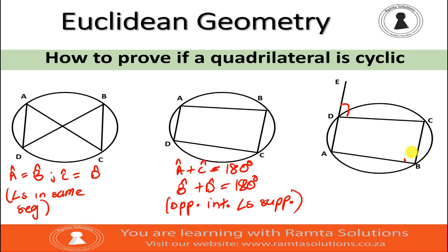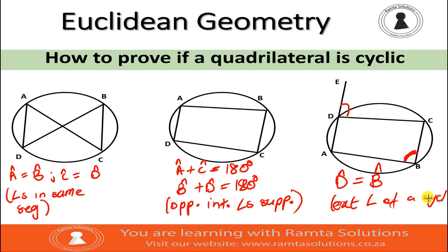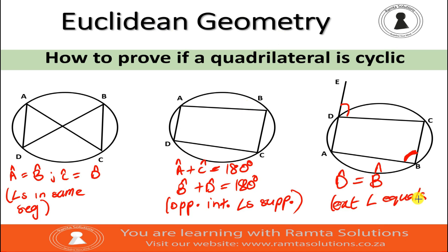Then lastly, looking at the diagram on the right: angle D is equal to angle B. The reason is the exterior angle of a cyclic quad. With this one, you need to be careful — even if you don't say exterior angle of a cyclic quad, you can still say the exterior angle is equal to the interior opposite angle, because we are proving. Exterior angle is equal to the interior opposite angle.